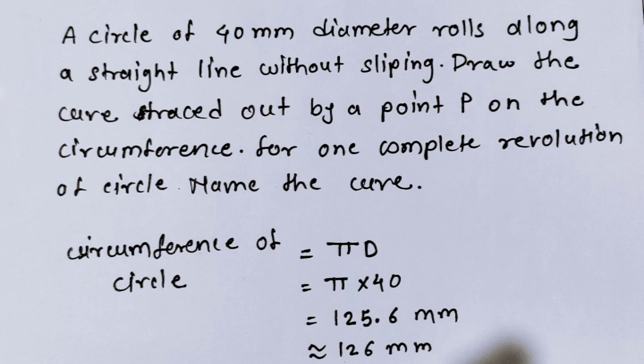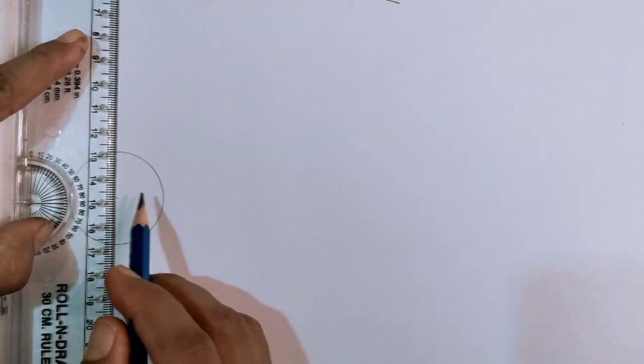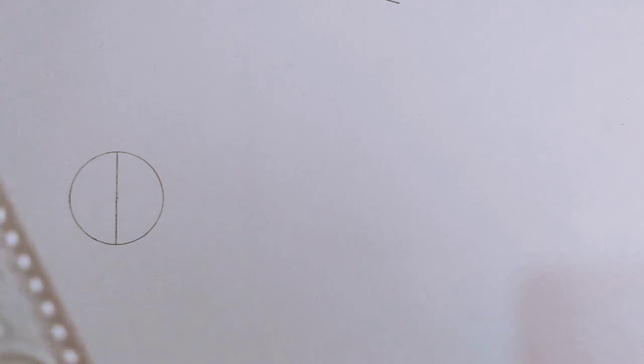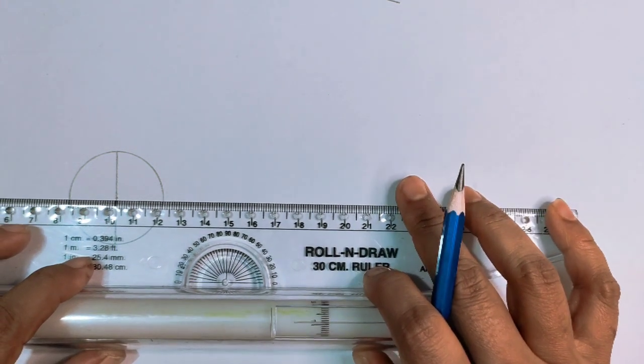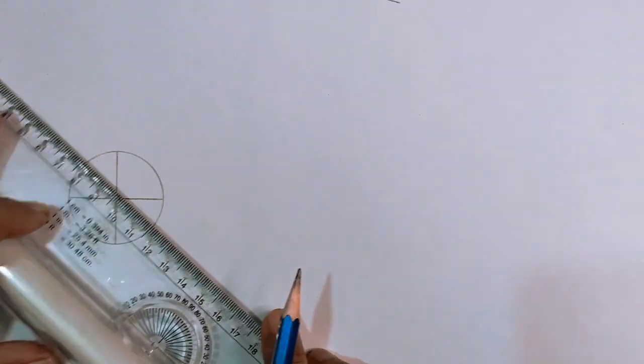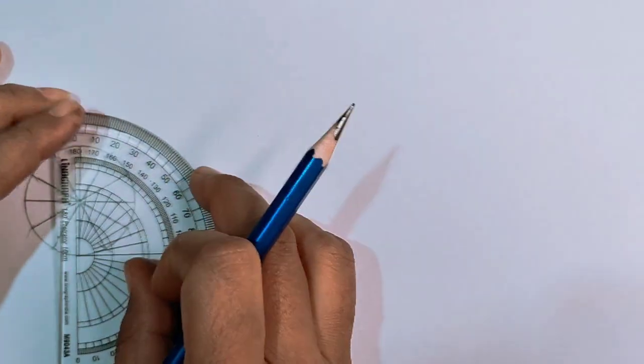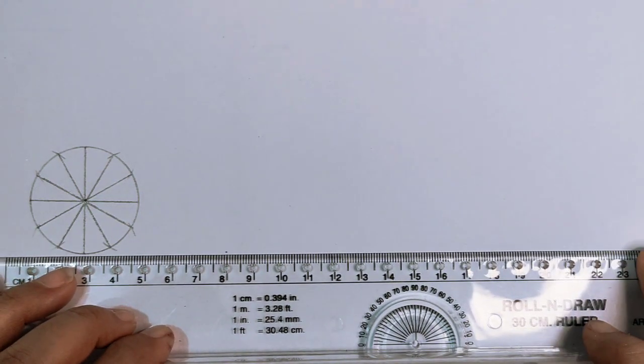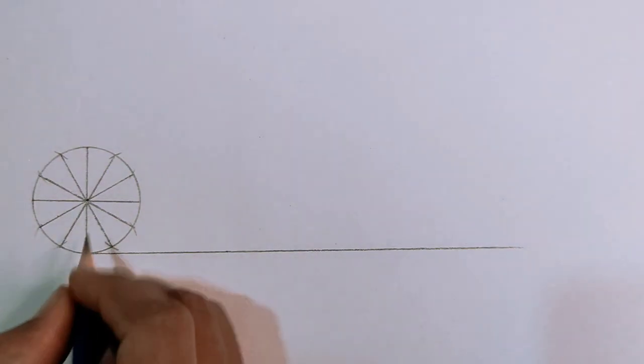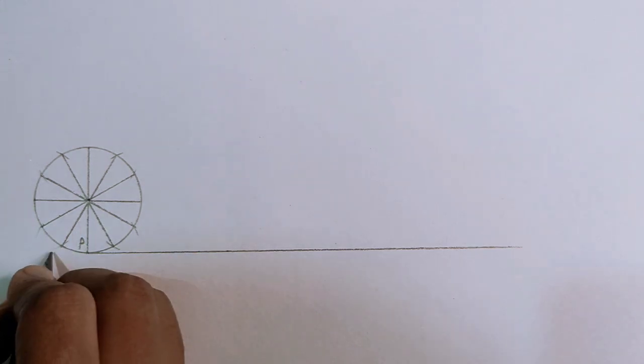Let's start our construction. Draw a circle of diameter 40mm, then divide that circle into 12 equal parts and name the points as 1 to 12. Mark the points in a clockwise direction because our circle rolls clockwise on the straight line.